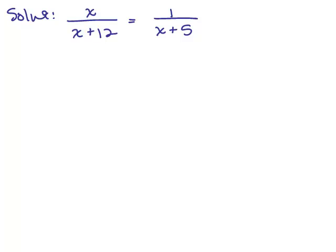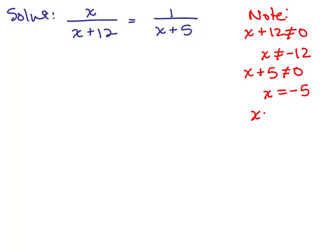Here's another problem. Solve x over x plus 12 equals 1 over x plus 5. Before solving this, let's pay attention to the denominators. The denominators cannot be equal to 0. So note, x plus 12 cannot be equal to 0, which is to say x cannot be negative 12. Also, x plus 5 cannot be equal to 0, so x can't be negative 5. Basically, x cannot be negative 12, and it cannot be negative 5. Just got to keep that in mind.